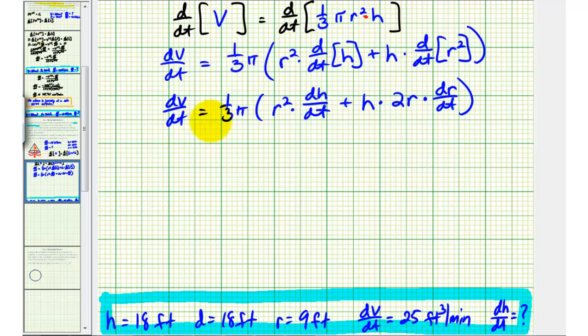Now let's start performing substitution so that we can find dh/dt. We know dV/dt is equal to 25 cubic feet per minute, so we have 25 equals one-third pi times r squared. Well, we know r is nine, so we'd have nine squared times dh/dt.